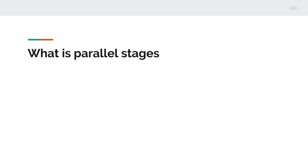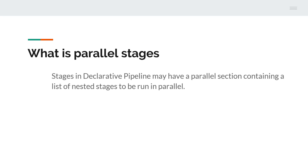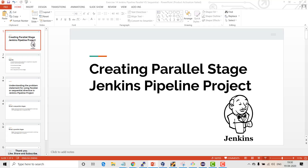Then we have the parallel stage. Stages in a declarative pipeline may have a parallel section containing a list of nested stages to be executed in parallel - like you have several stages and all those stages can run in parallel. We're also going to see this in the demo. So let's go for the demo now.